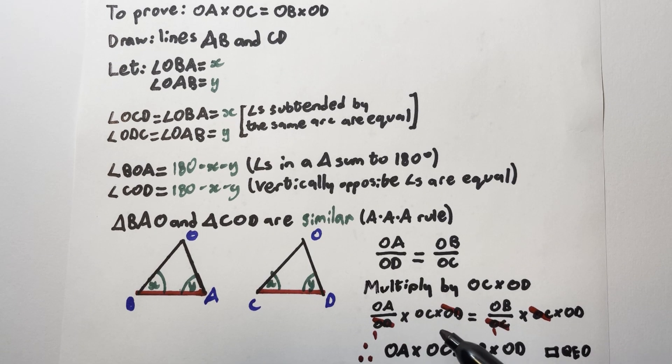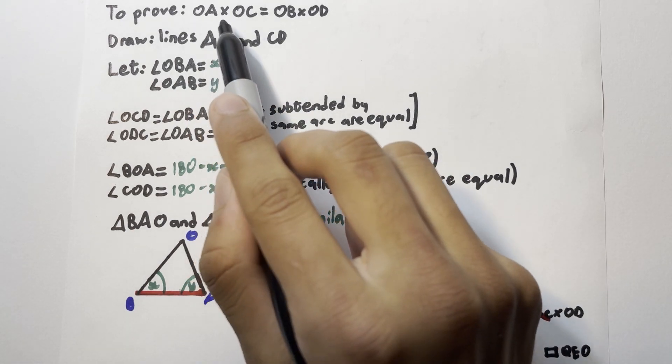OD in the denominator is cancelled out by the OD that we're multiplying by, and similarly the OC in the denominator is cancelled out by the OC that we're multiplying by. When you multiply these out finally, you're left with OA times OC equals OB times OD, which is what we were originally trying to prove.